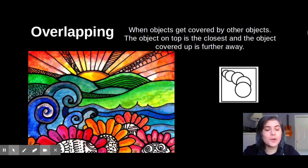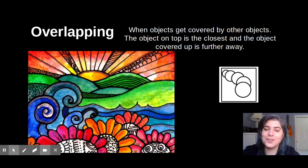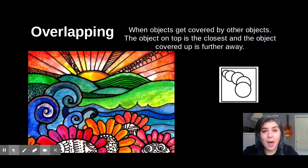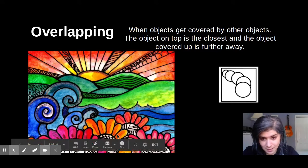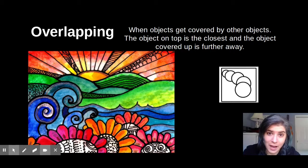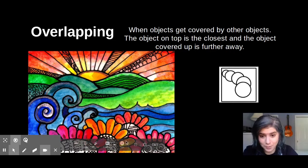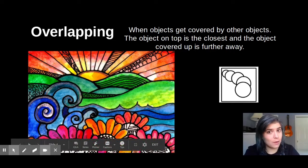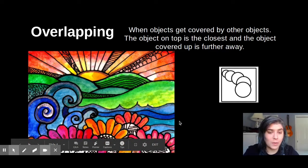Last but not least, the third way to show the element of art, space, is by using overlapping. You guys should know all about overlapping by now. Overlapping just means we put some objects in front of other objects, and that kind of blocks part of the back object. To show that the front object — for example, in this picture, the flowers — is closer, we have to cover up part of the wave.